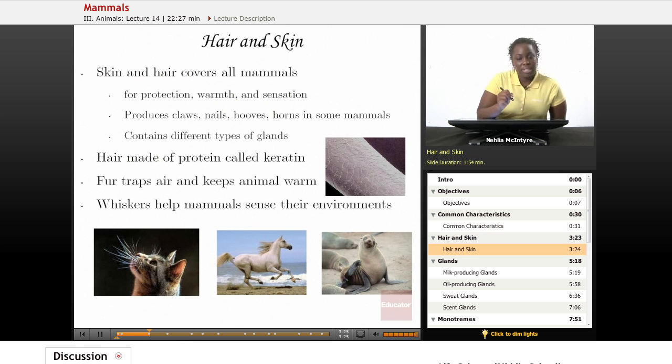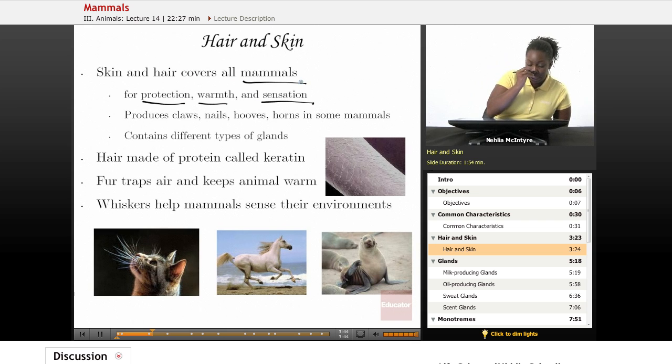Let's first discuss the hair and skin of mammals. Hair and skin play a very important part in the life of the mammal because it provides protection, warmth, and sensation for those animals. Hair and skin cover the whole body of a mammal. The skin also produces things like claws, nails, hooves, and horns in some mammals. The skin carries several different types of glands, which we'll discuss also in this lesson.